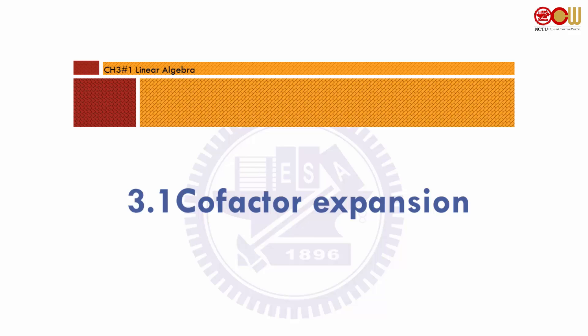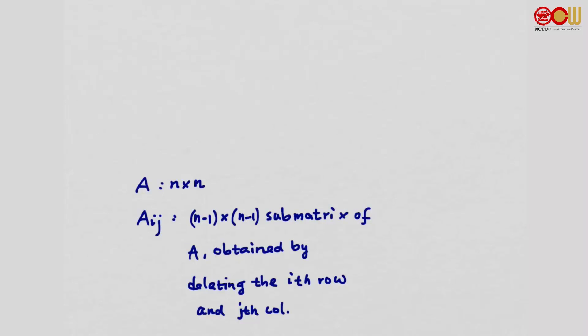3.1 Cofactor Expansion. Before we define determinant, first we introduce a notation Aij. Aij is a submatrix of A. Suppose A is n by n. Then Aij is n-1 by n-1. We obtain Aij by deleting the i-th row and j-th column from A.